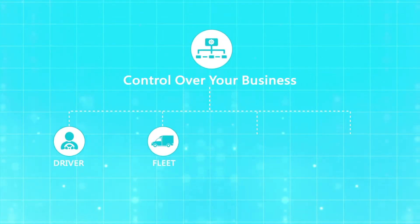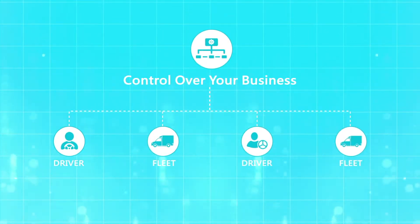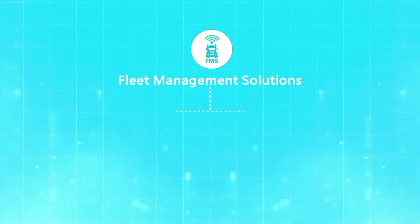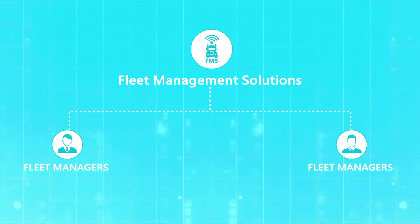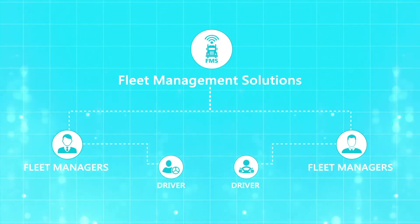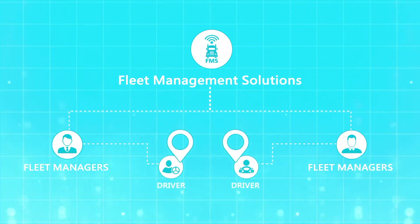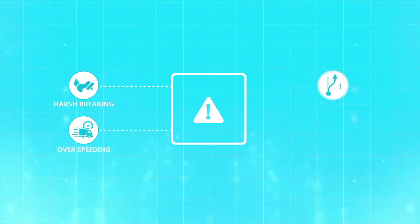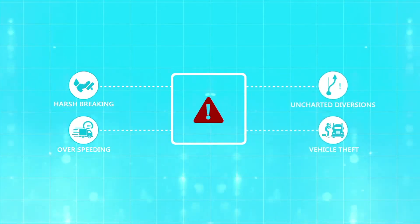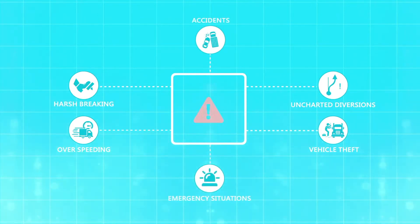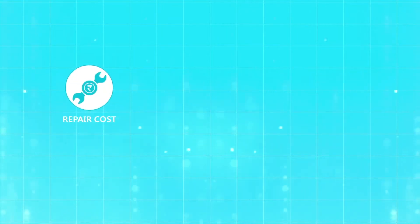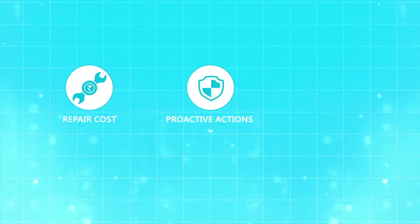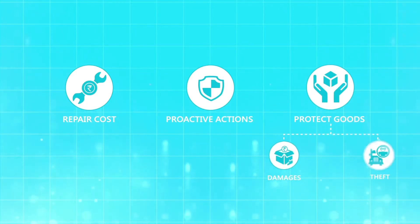Getting more control over your business starts with knowing the whereabouts of your fleet and driver. Fleet Management Solutions allows fleet managers to track and monitor the exact location of a vehicle and driver. It will also send alerts on critical functions such as harsh braking, overspeeding, unchartered diversions, vehicle theft, accidents, and other emergency situations. This helps avoid unnecessary repair costs.